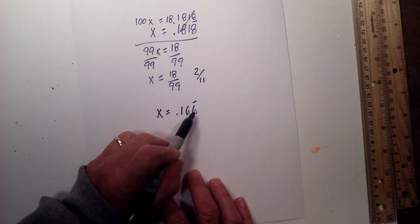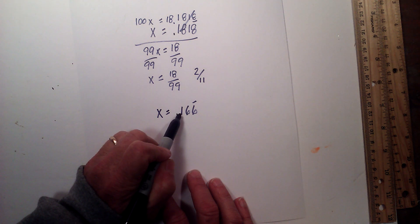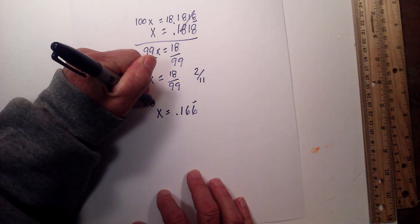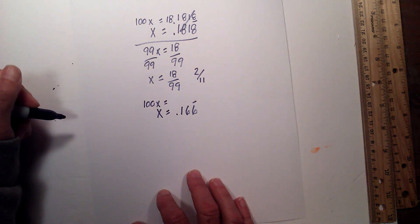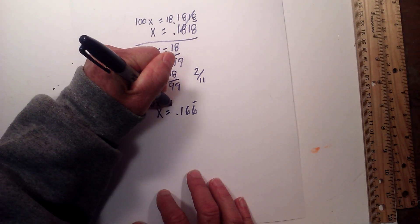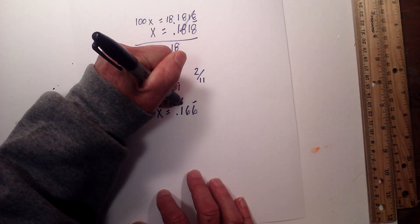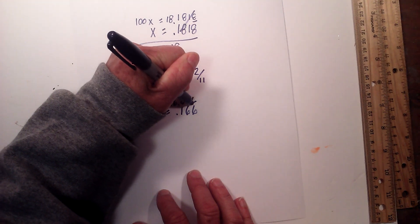But we do only have one digit repeating, but we have a non-repeating digit. So instead of multiplying it by 10, we're going to multiply it by 100 again. And then now we're going to get 16.666.